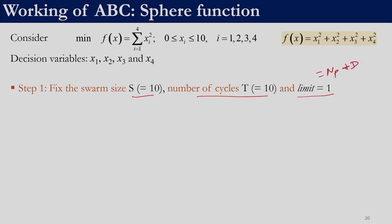NP in this case will be S/2, which is 10/2 = 5, and the number of decision variables is 4. So we are working with this 4-variable problem. It should have been taken to be 20, but if we had taken the limit to be 20 we would have had to perform a large number of iterations to encounter the scout phase. Since the motivation here is to show all the phases, we have taken a very small value of limit equal to 1.